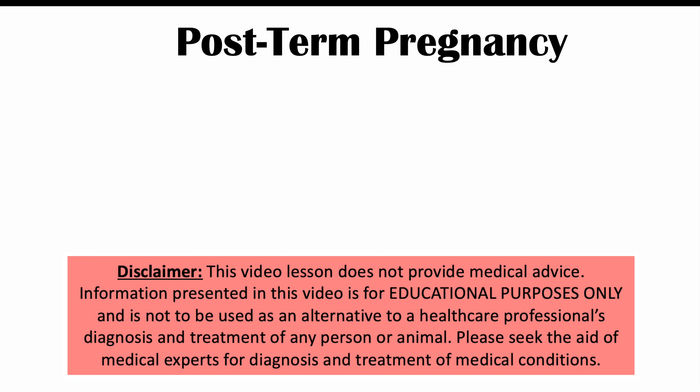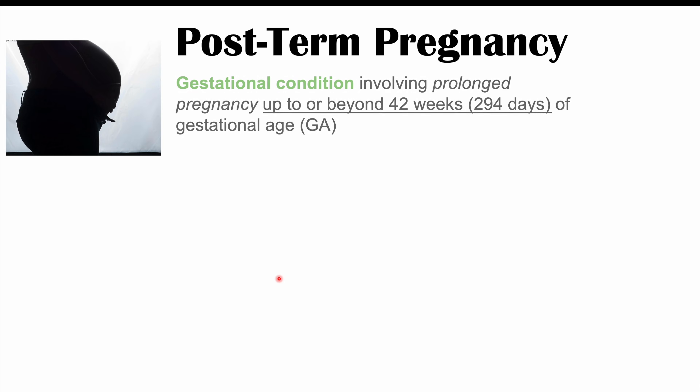This lesson is an overview of post-term pregnancy and the condition known as post-maturity syndrome. Post-term pregnancy is a gestational condition — a condition that occurs during pregnancy — involving prolonged pregnancy up to or beyond 42 weeks or 294 days of gestational age.